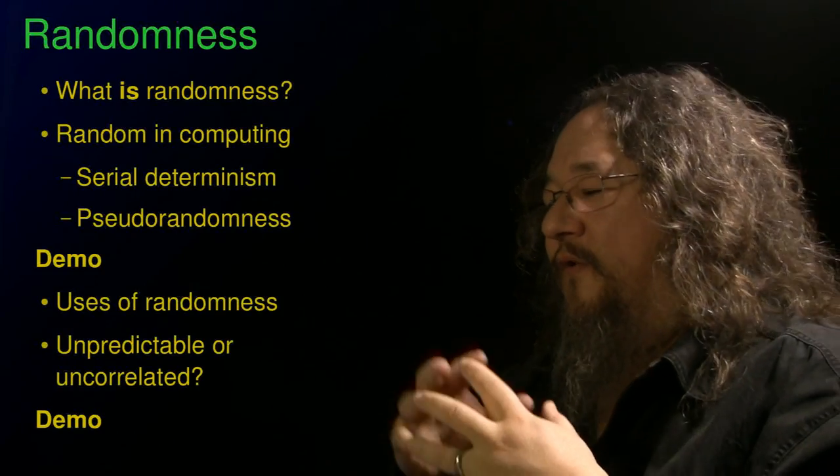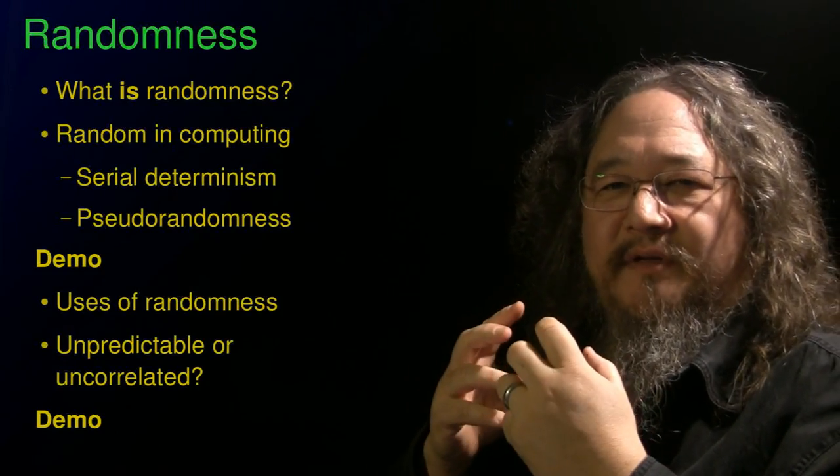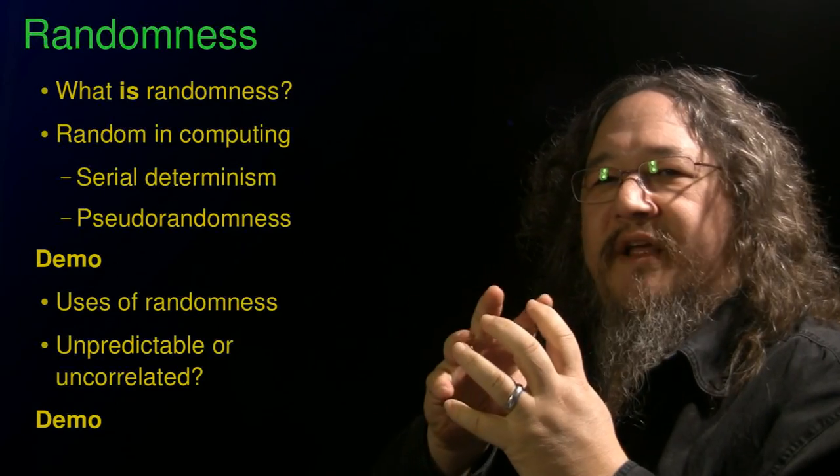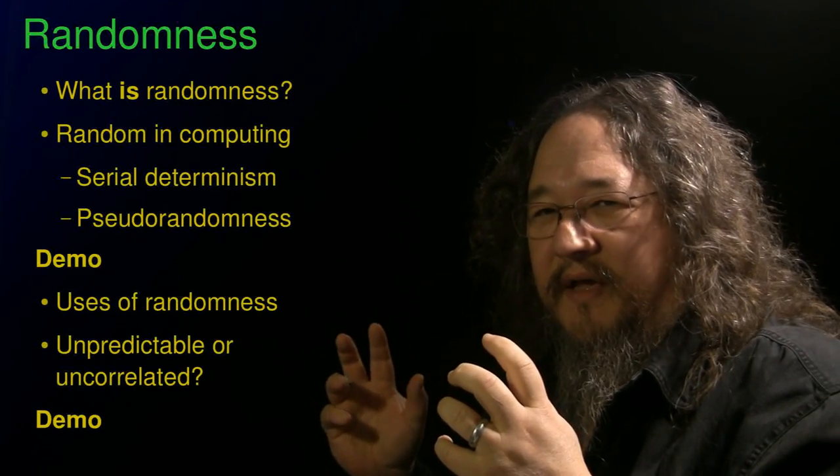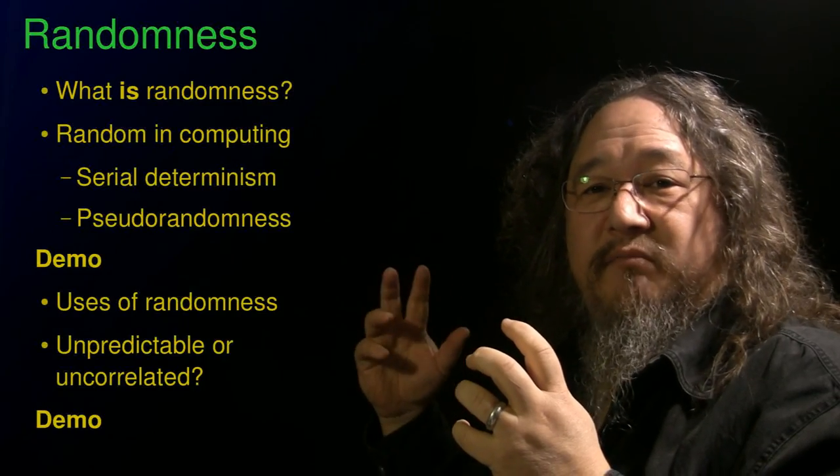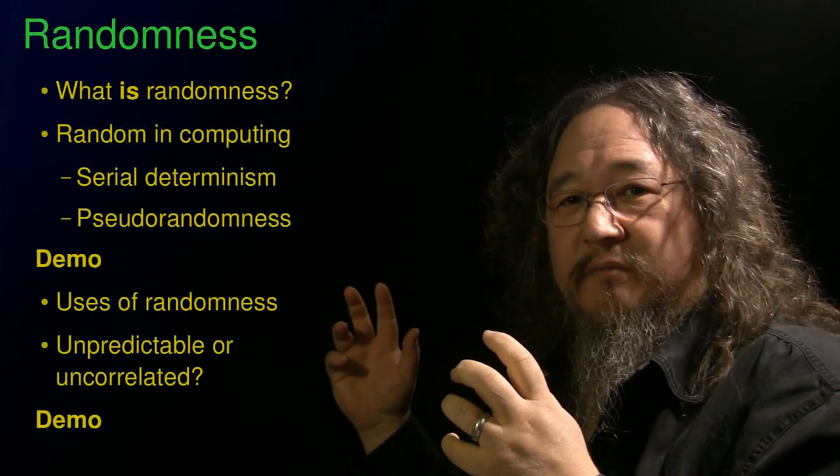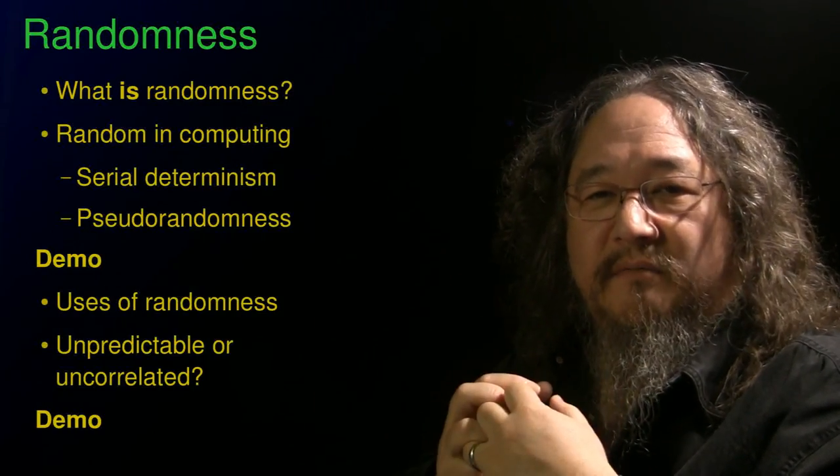Similarly, if we're making keys for our encryption to send messages to secure our documents, if anybody can predict what those keys are going to be, they can break our encryption. So, in essence, there's two views of randomness. One view says a random sequence must be completely unpredictable. And if it can be predicted, it can be broken. So the casino wants unpredictable. Encryption wants unpredictable.